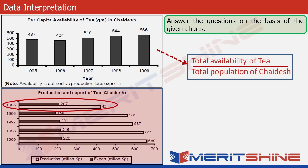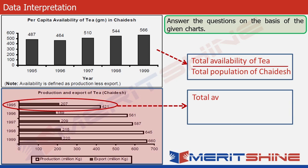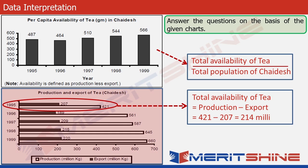From this data, the total availability of tea in Chayadesh in 1995 can also be calculated. It has to be the production minus the export, which would be 421 minus 207, giving us 214 million kg. This means that in 1995, 214 million kg was available for domestic consumption in Chayadesh.